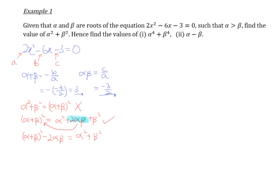This is the equation we need. The question asks us to find alpha squared plus beta squared, which equals alpha plus beta bracket squared minus 2 alpha beta. Alpha plus beta is 3, and alpha beta is negative 3 over 2. Substituting: 3 squared minus 2 multiplied by negative 3 over 2 gives us 9 plus 3, which equals 12. So alpha squared plus beta squared equals 12.